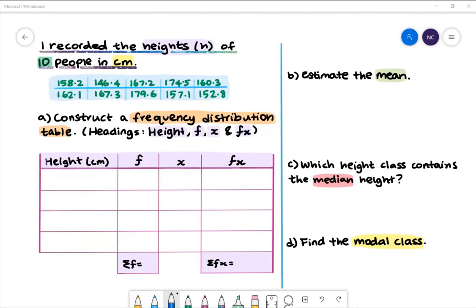Let's take a look at this example. I recorded the heights of 10 people in centimeters. The values are displayed in this table. Part A: Construct a frequency distribution table using the headings height, frequency, midpoint and frequency multiplied by midpoint.